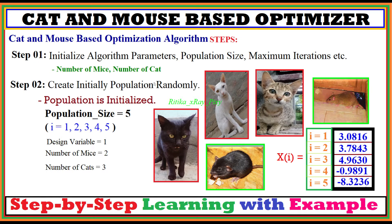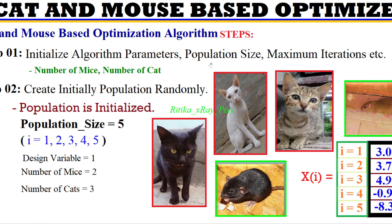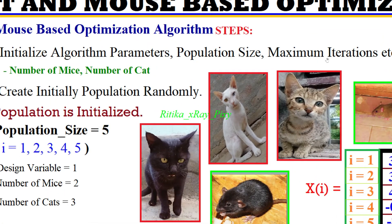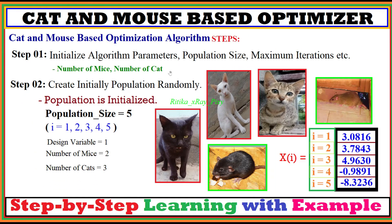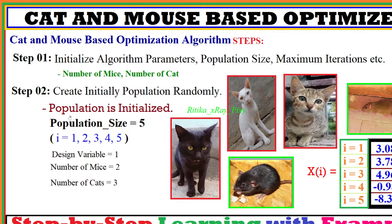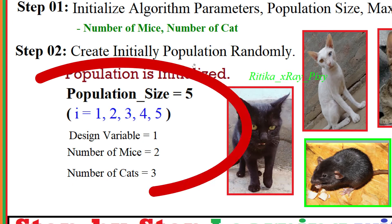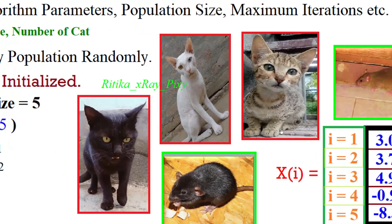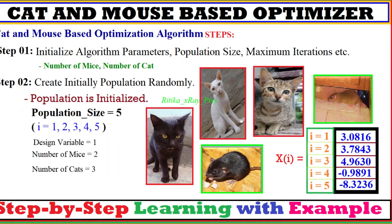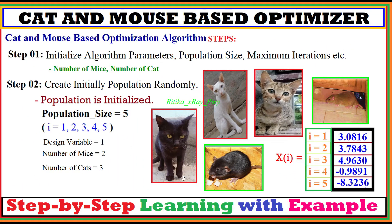Now we will understand this algorithm step by step with an example. In the first step, we initialize all important parameters: population size, maximum number of iterations, number of mice, and number of cats. For example, we create the initial population randomly — here we have five agents, with two mice and three cats.